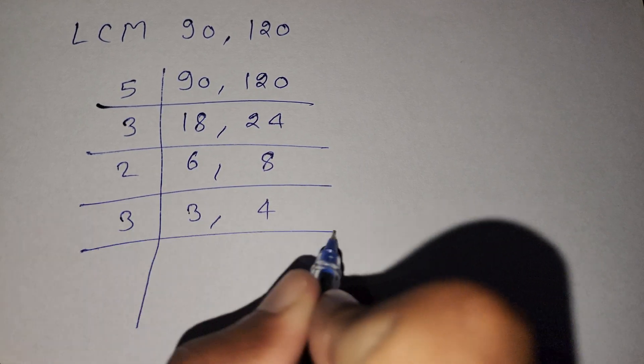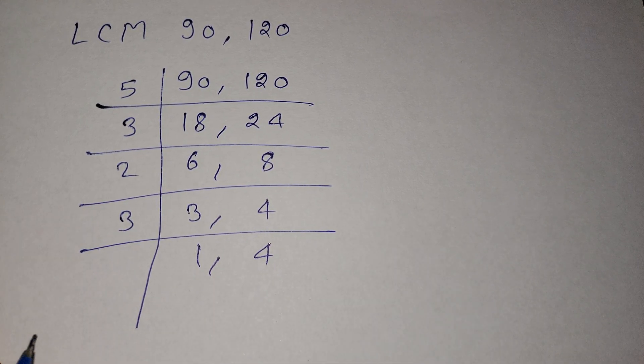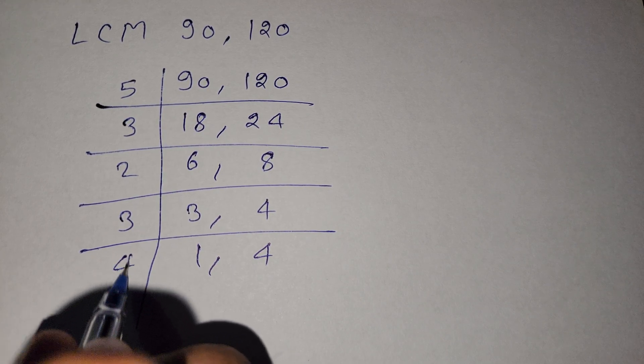Now we divide by 3, so here is 1 and here is 4. Then we divide by 4, getting 1 and 1.